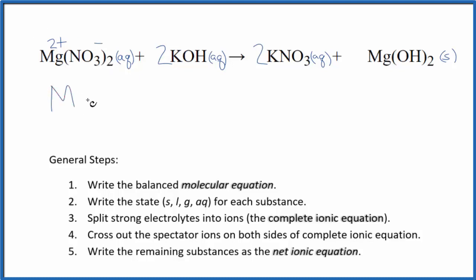So we have Mg2+, and I'll write aqueous at the end, plus two nitrate ions. Potassium is group one.